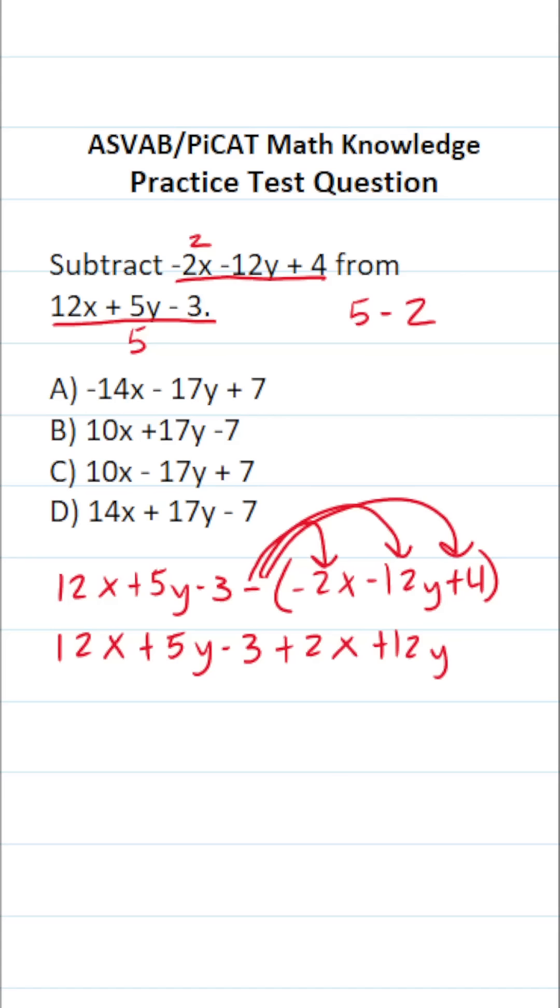A negative times a positive 4 becomes negative 4. All right, so now that we distributed that negative value, we're going to simplify this expression by combining like terms.